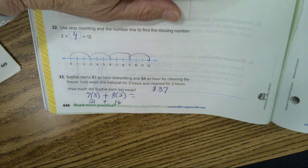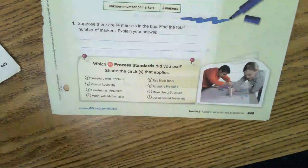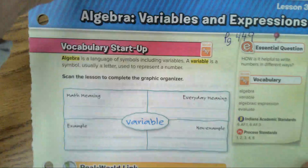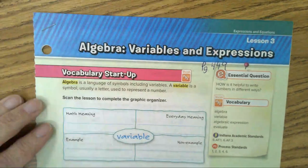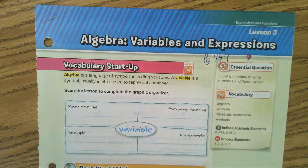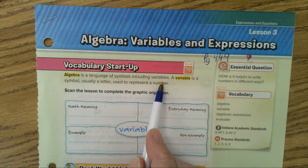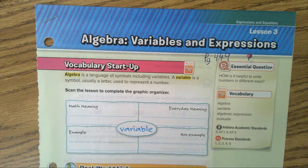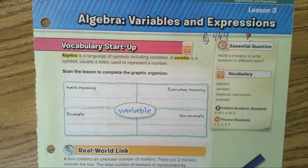Now, let's go to our lesson in the book. Lesson 3. Algebra, Variables and Expression. Page 449. Algebra is a language of symbols including variables. It's the language of mathematics, kids. A variable is a symbol, usually a letter, used to represent a number. Scan the lesson to complete the graphic organizer. Variable.